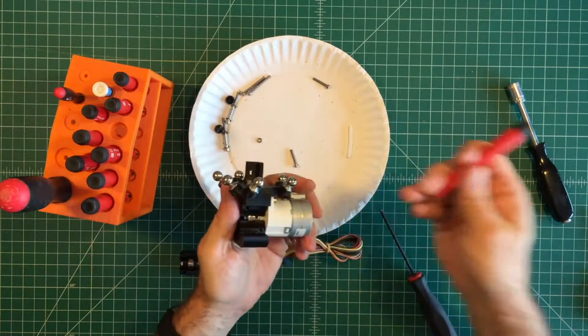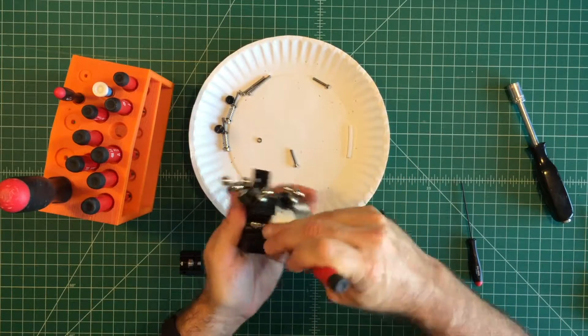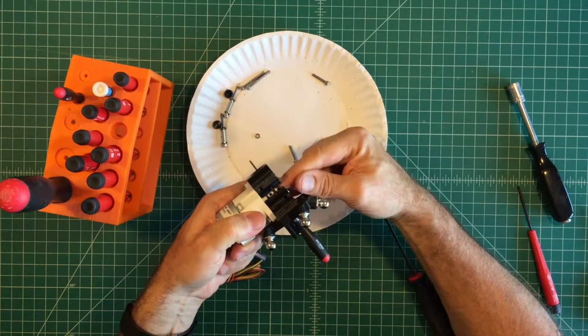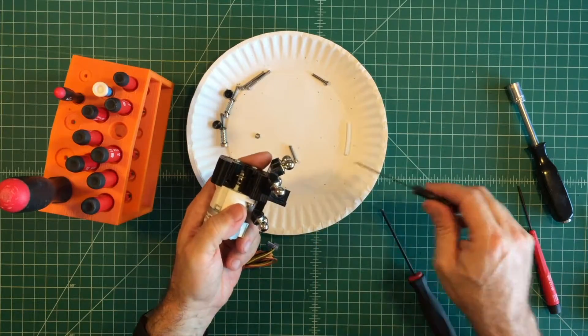Next loosen the drive gear and position it so it aligns when a small driver is inserted in the filament guide hole. Then tighten the drive gear.